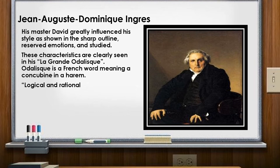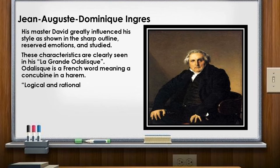The next and last person we need to talk about is Jean-Auguste-Dominique Ingres, whose master was David. David greatly influenced his style, as shown in sharp outlines, restrained emotion, and studied compositions. These characteristics are clearly seen in his work La Grande Odalisque. Odalisque is a French word meaning concubine in a harem. Sometimes it is logical and rational — when you say logical and rational, there is a deep meaning inside the works being created, with hidden facts inside that particular object.